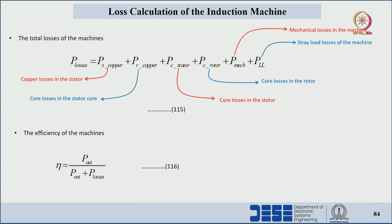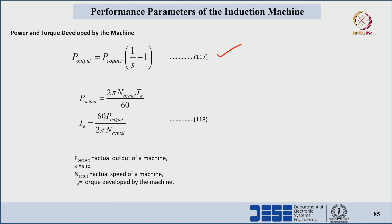After knowing all loss components — stator and rotor copper losses, stator and rotor core losses, mechanical losses, and stray load losses — we can find the output power. Efficiency equals output power divided by (output power plus total losses). The input power is P_out plus P_losses. From the copper loss we can calculate the exact output: P_out = P_copper_loss × (1/S − 1). From the mechanical output power equation P = 2πNT/60, we can calculate the torque developed.